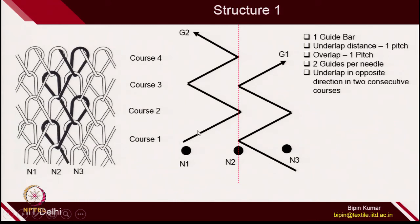If you follow a particular needle, say N1, in course number 1 the yarn is coming from G1, and in the second course, a different guide G2 is providing yarn to the same needle. The first loop is being formed by G1, the second loop by G2, and this alternates. Since the movement is symmetric and the same for all guides, we just need one guide bar for making this fabric. The underlap distance — changing position for each guide — is just one pitch, from one needle to the second needle. Overlap is always on the front side of the needle, so it will always be one pitch. Also, for each needle, 2 guides are required, and the underlap is in opposite directions in the 2 courses.